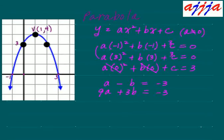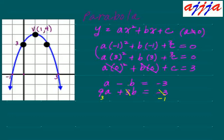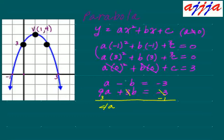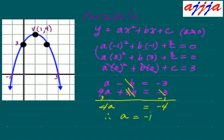Now, we can change the bottom one — divide by 3, divide by 3, divide by 3 — so we reduce it by 3. We have negative b and positive b. So we can add these two equations. Let's add: a plus 3a is 4a. Negative b plus positive b is gone. Negative 3 plus negative 1 is negative 4. So a equals negative 1.